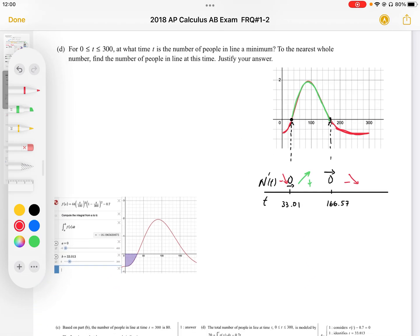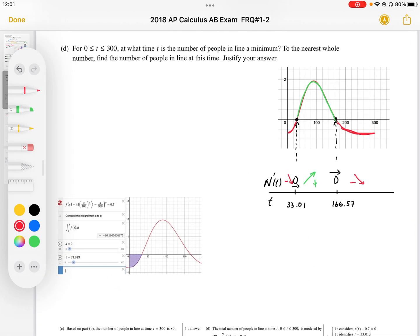When considering minimum, we have to consider our local minimum and endpoints, so I'm going to make a candidates list. My candidates are going to be my endpoint. My endpoint is going to be when t is equal to 0. We have 20 people.